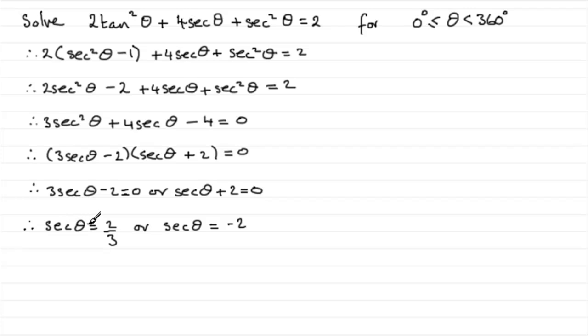Now secθ is 1 over cosθ so we therefore have 1/cosθ equals 2/3 or 1/cosθ equals -2. And if we rearrange this to make cosθ the subject you're going to have that therefore cosθ equals 3/2 or cosθ equals -1/2.